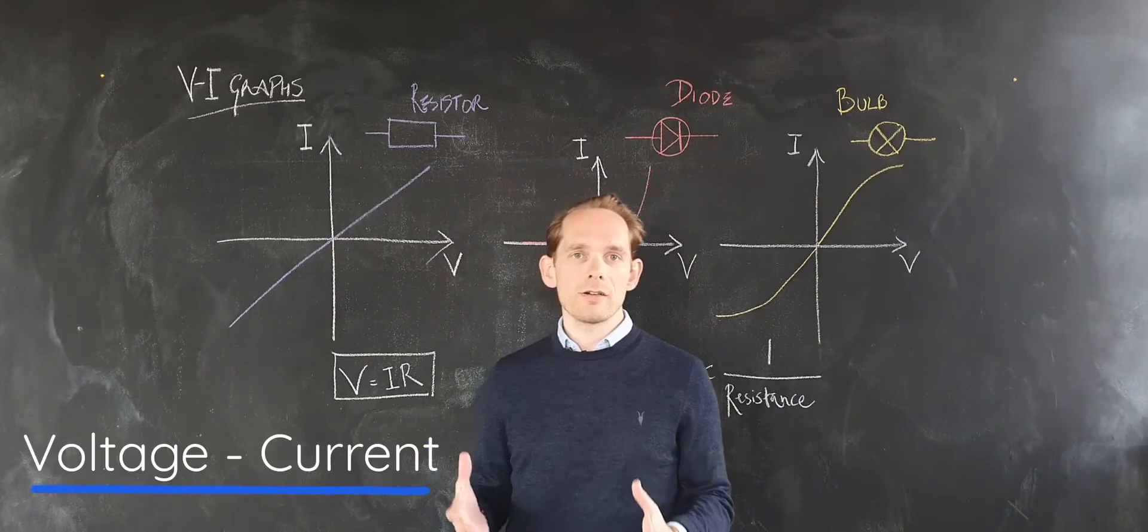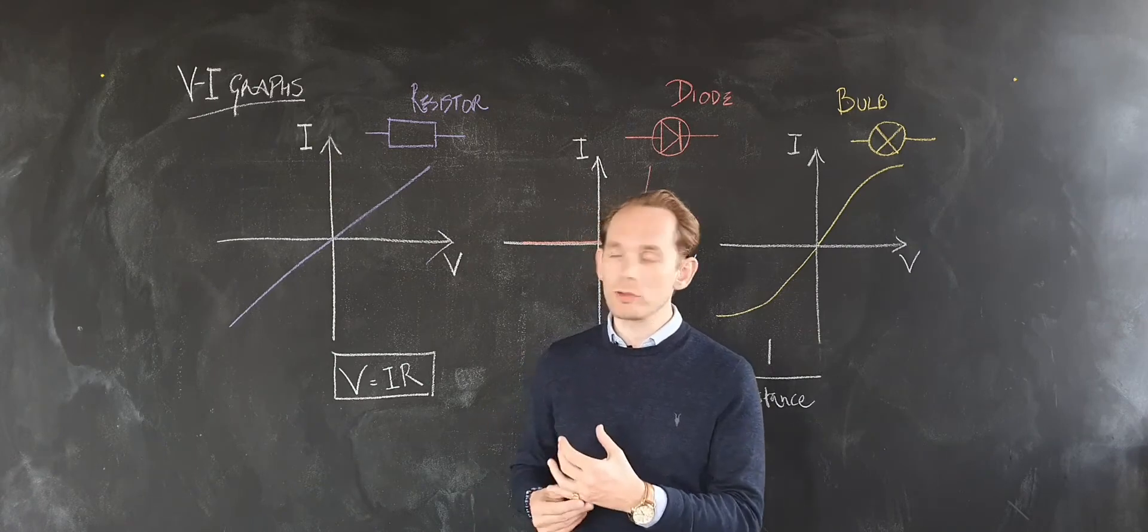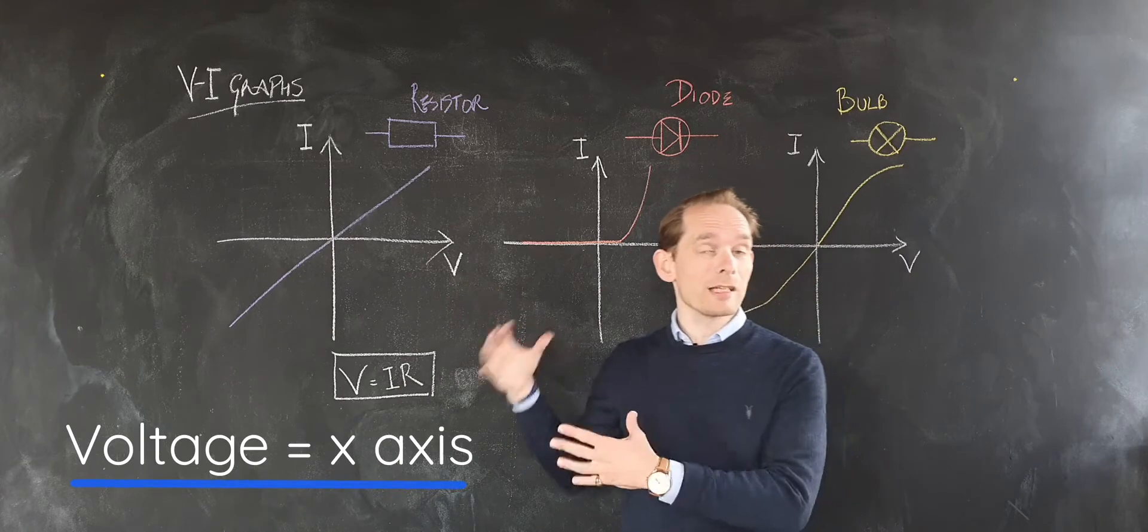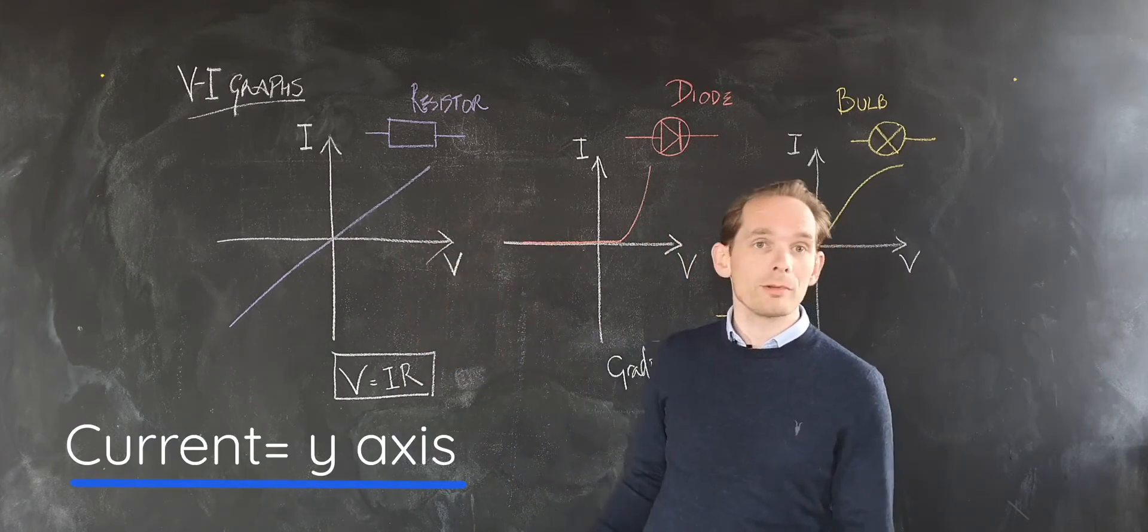Hello, this video is about VI graphs, where we look at what current flows through components as you change the voltage across them. So in all three graphs, the voltage, your independent variable, is the x-axis. The thing you're measuring, current, is the dependent variable, that's the y-axis.